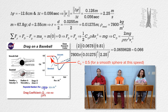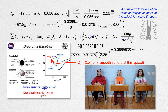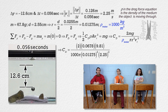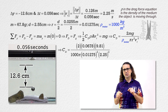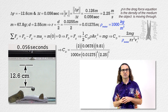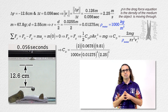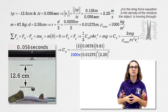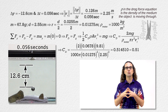We used the wrong density. The density in the force of drag equation is the density of the medium the object is moving through. We need to use the density of water: 1,000 kilograms per meter cubed. This is a very common mistake to make. All the other variables in the force of drag equation have to do with the object, except the density, which is the density of the fluid the object is moving through. Please remember that. When we substitute in 1,000 kilograms per meter cubed for the density of water, we get 0.514510, or 0.51, for the drag coefficient of the smooth steel sphere.